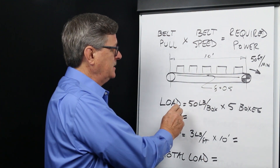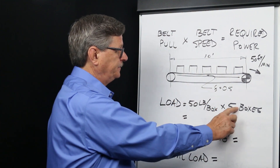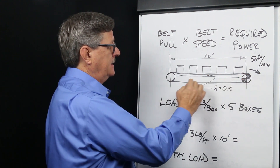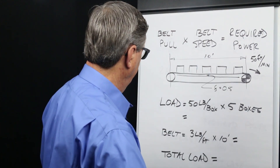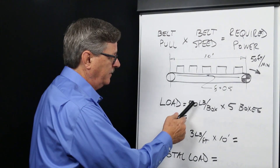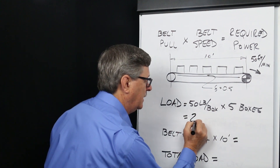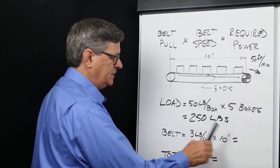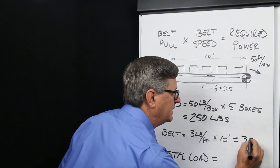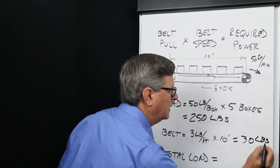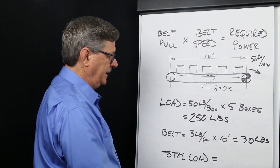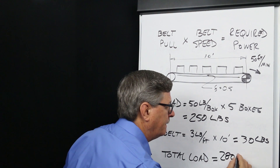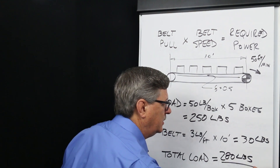Five packages at 50 pounds per package, plus the weight of the belt — which is 10 feet on the slider bed times 3 pounds per foot. 50 pounds per box times 5 boxes is 250 pounds. 3 pounds per foot of belt times 10 feet of belt equals 30 pounds. The total load on the slider bed is 250 pounds plus 30 pounds, or 280 pounds.